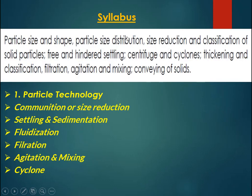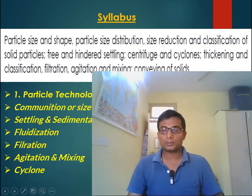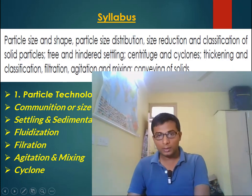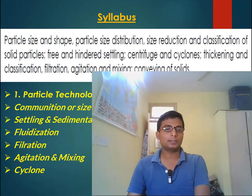The GATE chemical engineering syllabus for mechanical operation has been divided into different chapters: first is particle technology, second is comminution or size reduction, third is settling or sedimentation, fourth is fluidization, fifth is filtration, sixth is agitation and mixing, and seventh is cyclones. These are the chapters which need to be covered to complete the GATE syllabus for mechanical operation.